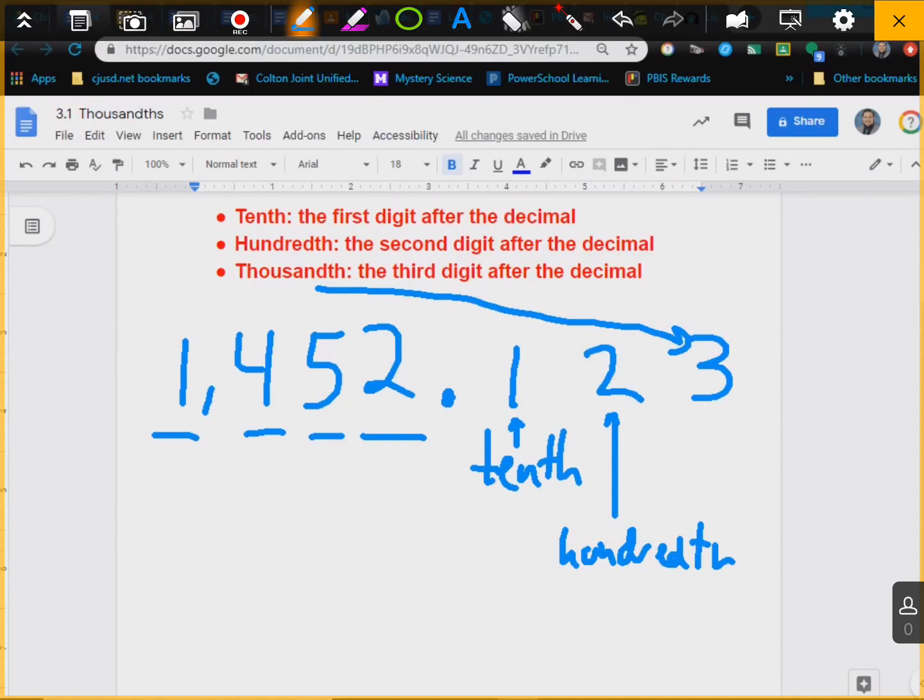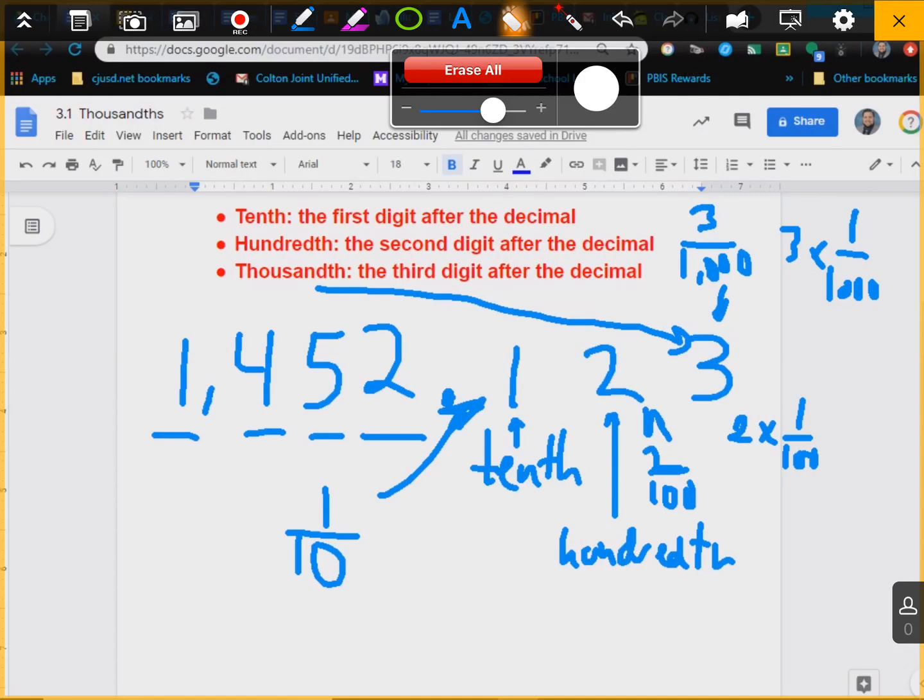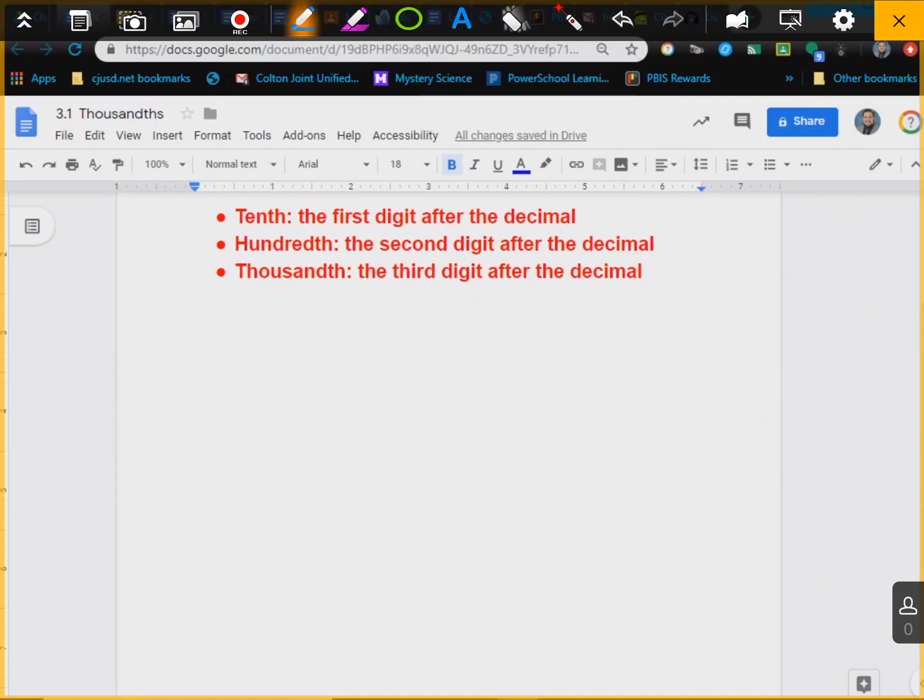And so we know this would be the same as 1 over 10 right here. This 2 is like 2 over 100, and this 3 is the same as 3 over 1,000. Or 2 times 1 over 100 and 3 times 1 over 1,000. But we won't go into that too much today. All I want you to be aware of is there are numbers after a decimal. Anything after a decimal, this would be the tenths, hundreds, and thousands.